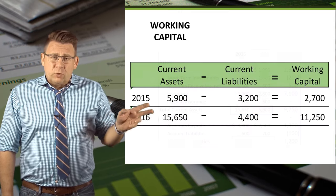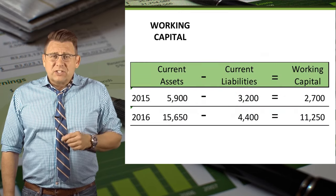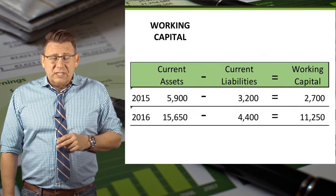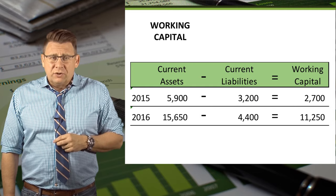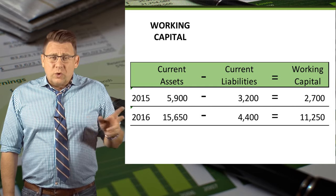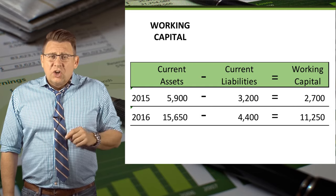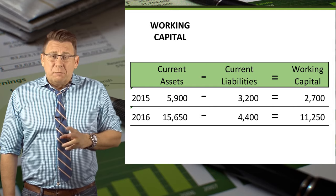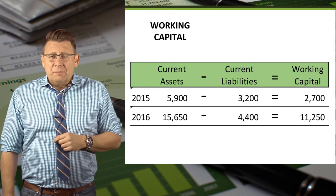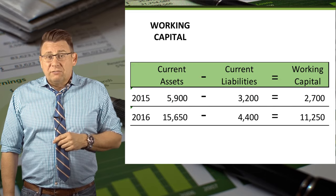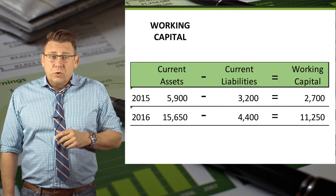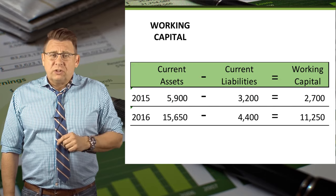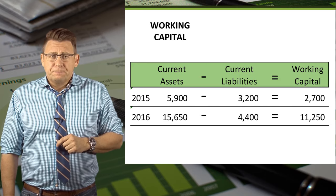For 2015, current assets minus current liabilities gives us working capital of $2,700. For 2016, current assets minus current liabilities gives us working capital of $11,250, which is a substantial increase.